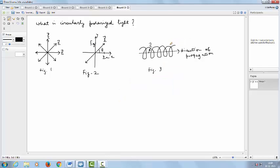There are two ways that circularly polarized light may be realized. These are right circularly polarized light and left circularly polarized light.